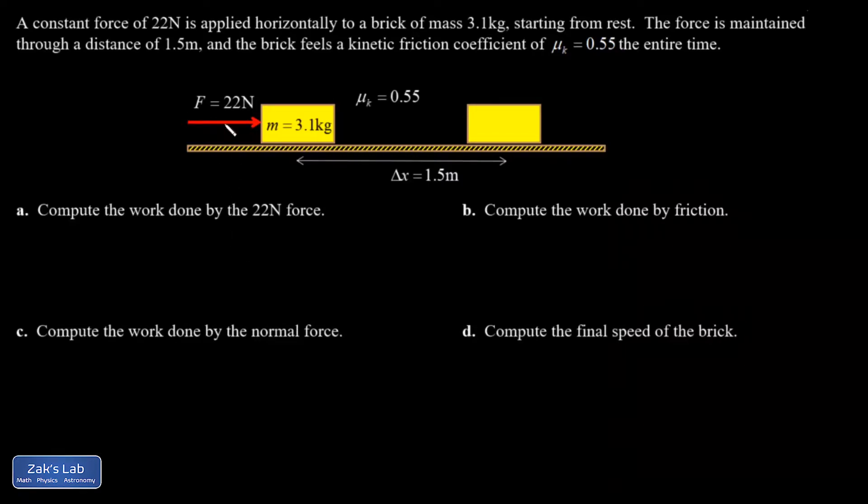In this problem, we're looking at a brick sliding across the table, starting from rest. There's an applied force of 22 newtons causing this to happen. There's also a kinetic friction coefficient causing it to end up slower than it would otherwise. And we're going to handle this by using work and energy.